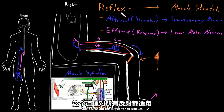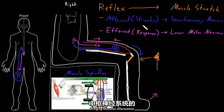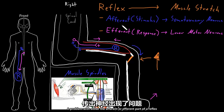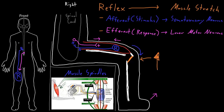This is true for all reflexes: if there's a problem with either the afferent part bringing stimulus information into the central nervous system, or the efferent part carrying response information out to the periphery, a problem with either part can cause a diminished or lost reflex, because both parts have to be working for the reflex to occur.